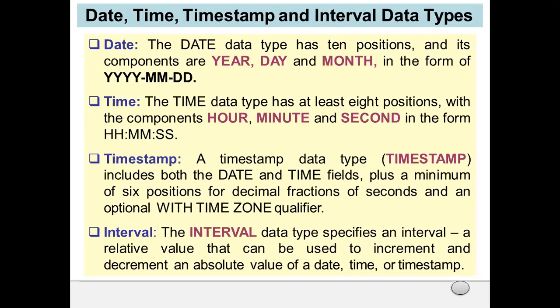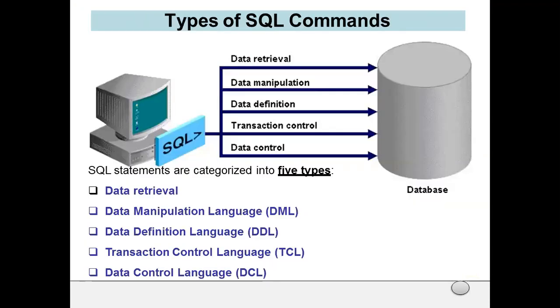The next data type is interval. The interval data type specifies a relative value that can be used to increment or decrement an absolute value of a date, time, or timestamp. These are the data types in SQL.